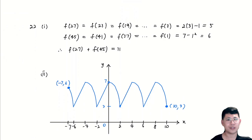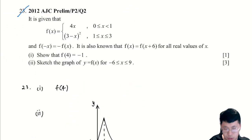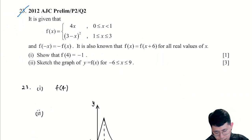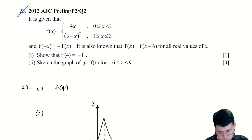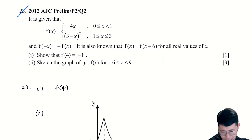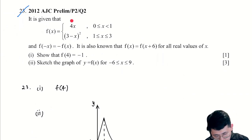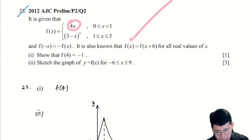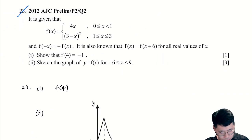Let's move on to question 23. In this next past year question, we have f(x) defined in a piecewise manner from 0 to 1 and from 1 to 3. We have 4x, which is a straight line graph, and 3 − x², which is a quadratic graph.